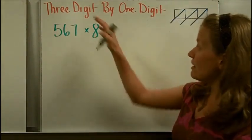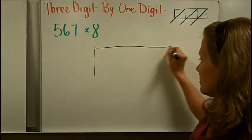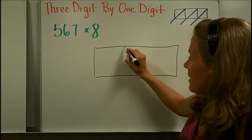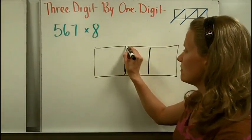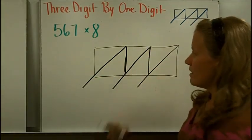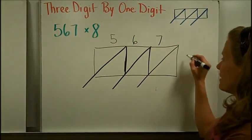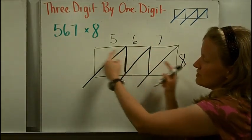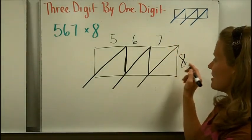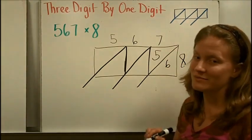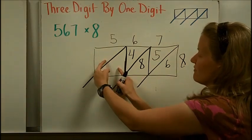Let's do a bigger problem — a 3-digit by 1-digit problem. We aim for three boxes side by side, so I draw one long skinny rectangle and divide it into three boxes by drawing two lines down, then add diagonal lines the same way as before. I put the three-digit factor on the top and the single-digit factor 8 on the right. Then I fill in the products: 7 times 8 is 56; 6 times 8 is 48; and 5 times 8 is 40.